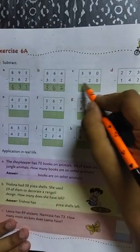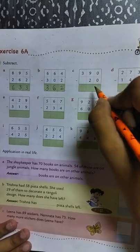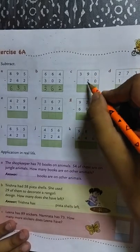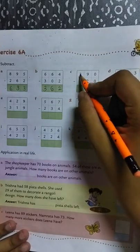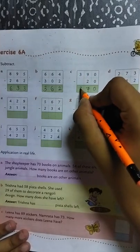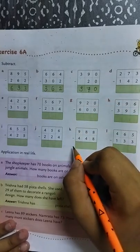Next, 390 minus 20. 0 minus 0 is 0. 9 minus 2 is 7. And here we have to subtract nothing from 3, so 3. The answer is 370.